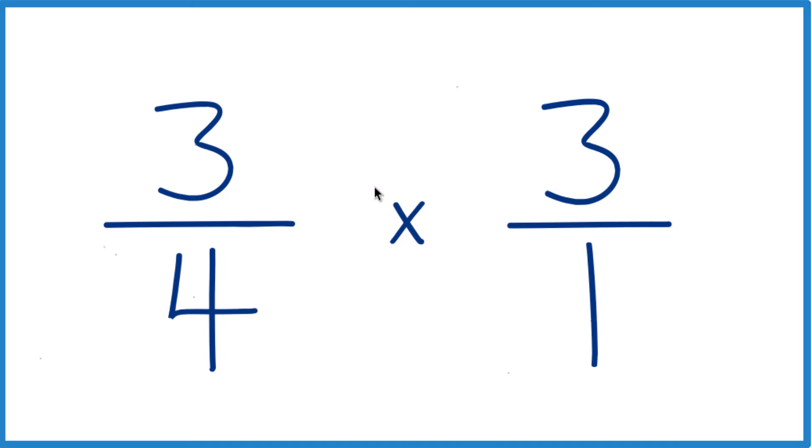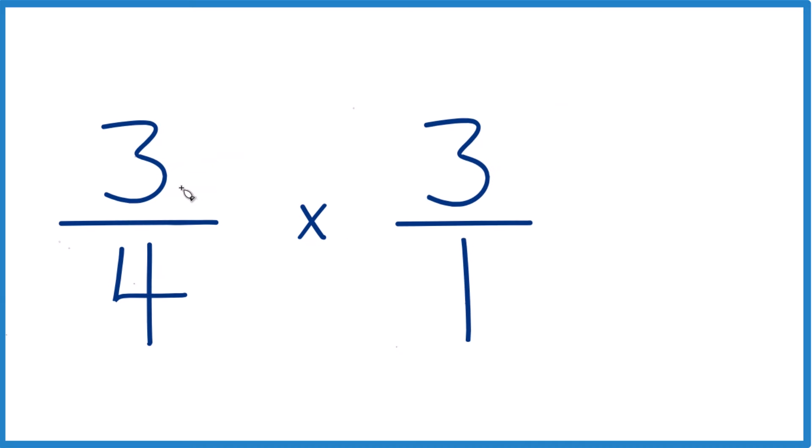Because now we can multiply the numerators. Three times three, that equals nine, and four times one, that equals four. So three-fourths times three over one, or just three, that gives us nine-fourths.